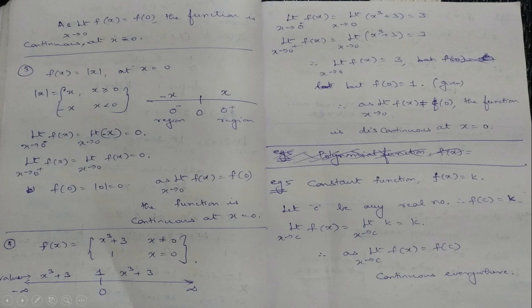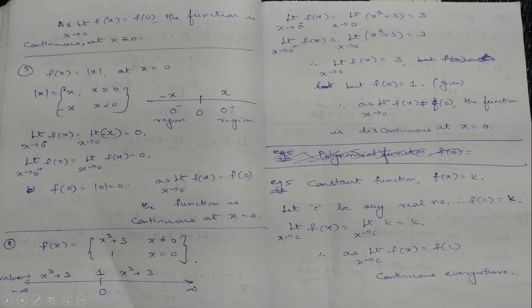Always find f(0) first. f(0) = |0| = 0. Then find left-hand and right-hand limits. Left-hand limit: limit as x→0⁻ of f(x) = limit of −x as x→0, which is −0 = 0. Right-hand limit: limit as x→0⁺ of f(x) = limit of x as x→0 = 0. The value of the limit is also 0. The value of the function is also 0. Therefore, the function is continuous at x = 0.